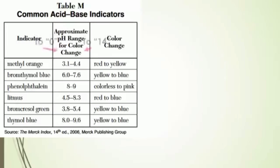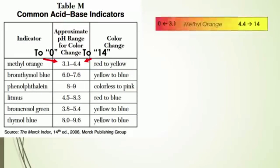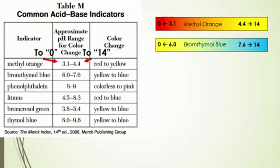If we add these numbers to our reference table, we'll see that at a pH from 0 to 3.2, methyl orange will be red, and at a pH of 4.4 to 14, methyl orange will be yellow. This is true for all the indicators — it will show the color to the left when the pH is between 0 and the first number, and the color to the right when the pH is between the second number and 14. Bromothymol blue is yellow at a pH of 0 to 6, and blue at a pH of 7.6 and higher.